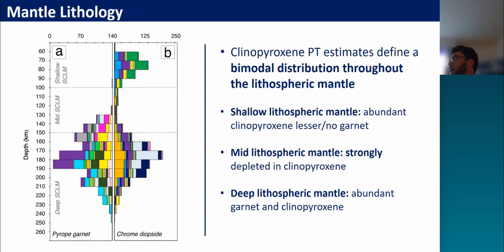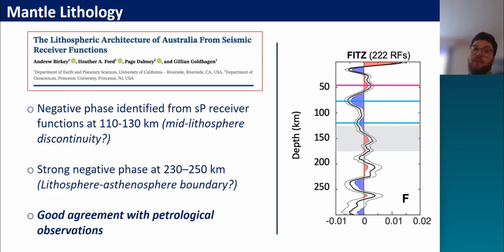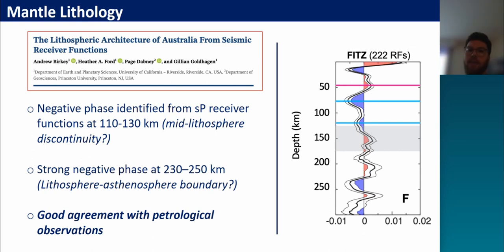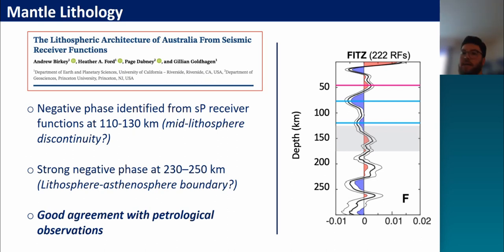Further evidence for what is causing this anomalous depletion comes from seismic datasets, in particular receiver functions. Recent receiver functions from Berkeley et al. in 2021 show that for the Fitzroy Trough, which occurs nearby to these kimberlites, there is a very anomalous negative phase at a similar depth interval within the mid-lithosphere at about 120 to 130 kilometres depth. This strong negative amplitude agrees quite well with the absence of clinopyroxene. There is also quite a strong negative phase at 230 to 250 kilometres depth, which agrees with the depth of the lithosphere-asthenosphere boundary from our petrological datasets.